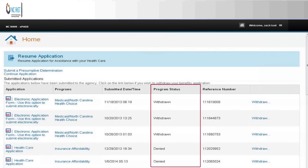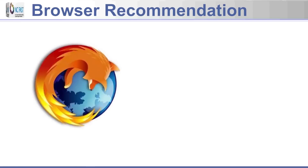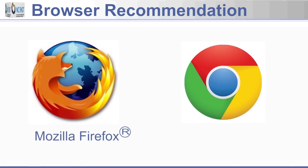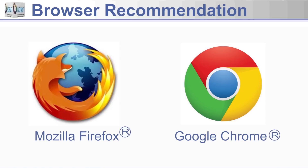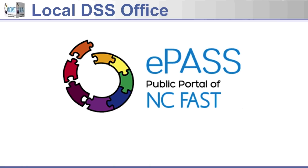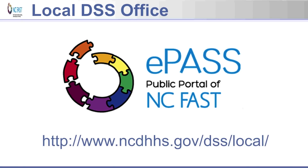Users can log in to check on the status of an application or contact their local DSS office. If you have any questions or need further support, contact your local DSS office. To locate your local DSS office online, go to www.ncdhhs.gov/dss/local.